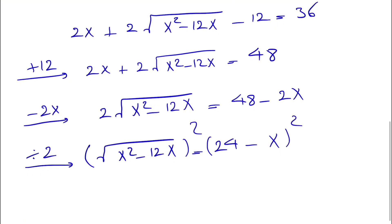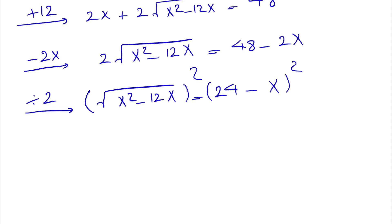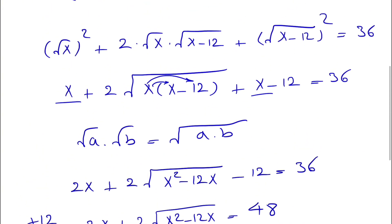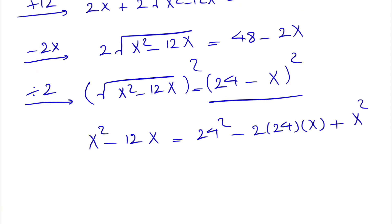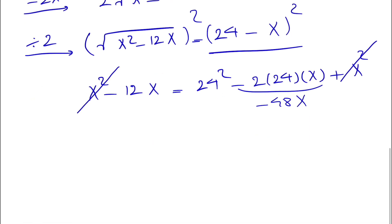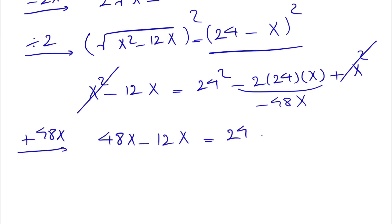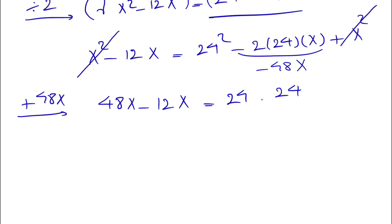Now we square each side to eliminate the square root, giving x²−12x on the left. On the right we have (24−x)², which expands using the negative-sign formula: 24² minus 2 times 24 times x plus x², that is 576 minus 48x plus x². The x² terms cancel from both sides, and adding 48x to each side gives 48x minus 12x equals 576.